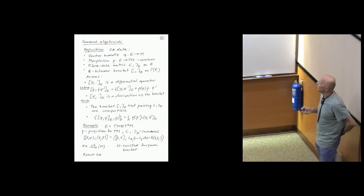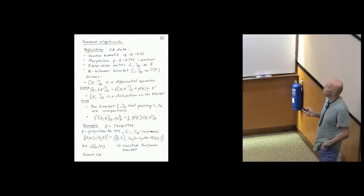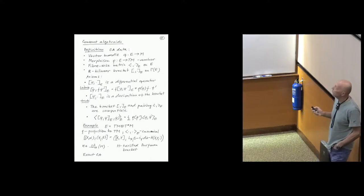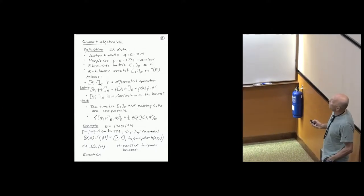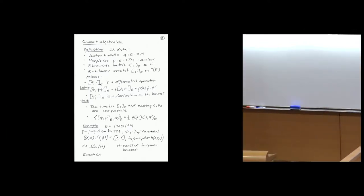Since we would like to understand this from the point of view of generalized geometry of Courant algebroids, let me recall the definition. The data is: a vector bundle with total space E and base manifold M; a morphism from the total space to the tangent bundle of M, called the anchor; a fiberwise metric on the total space; and an ℝ-bilinear bracket on the sections. The first axiom is that fixing a section and bracketing with it is a differential operator — it satisfies the Leibniz rule with respect to multiplying the second input by a function. You take the function out of the bracket, but then there is another term involving the anchor applied to the function.